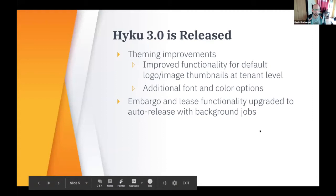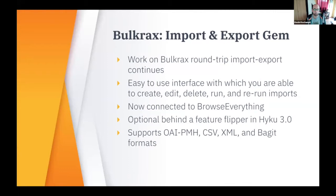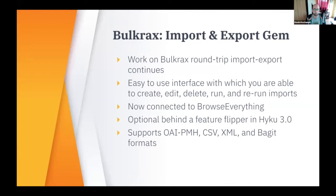Other improvements include theming improvements — more on that later. Embargo and Lease can now auto-release using background jobs. BulkRax is the easy-to-use interface where you're able to create, edit, delete, run, and rerun imports. It supports a variety of formats including OAI-PMH, CSV, XML, and BagIt. As mentioned, it's now optional in Haiku 3.0 at the per-tenant level.